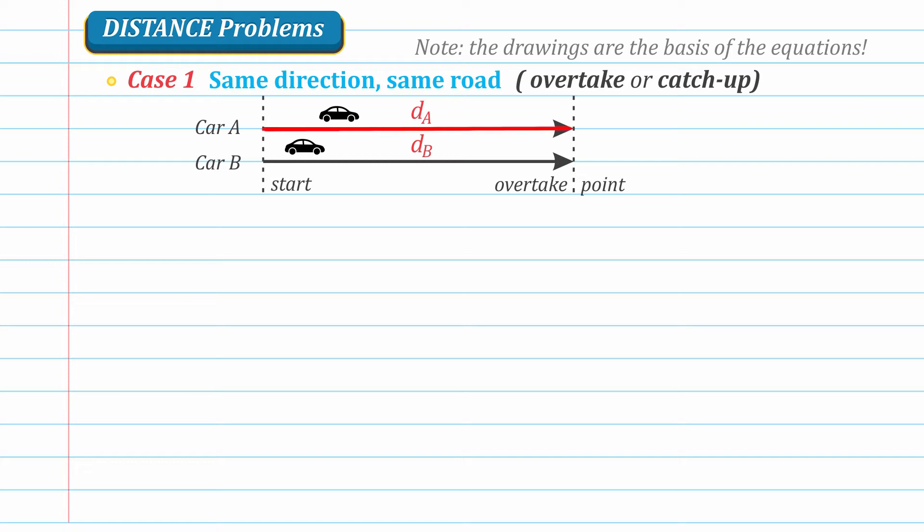we expect that the distance traveled by the two objects will be equal at the point where one overtakes the other. So the equation from this drawing will be distance traveled by A or D sub A is equal to the distance traveled by B or D sub B.